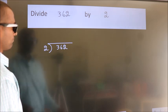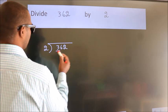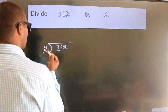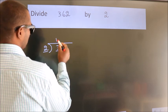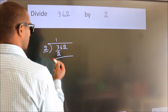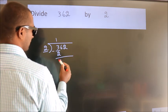Next. Here we have 3, here 2. A number close to 3 in 2 table is 2 ones 2. Now we should subtract. We get 1.